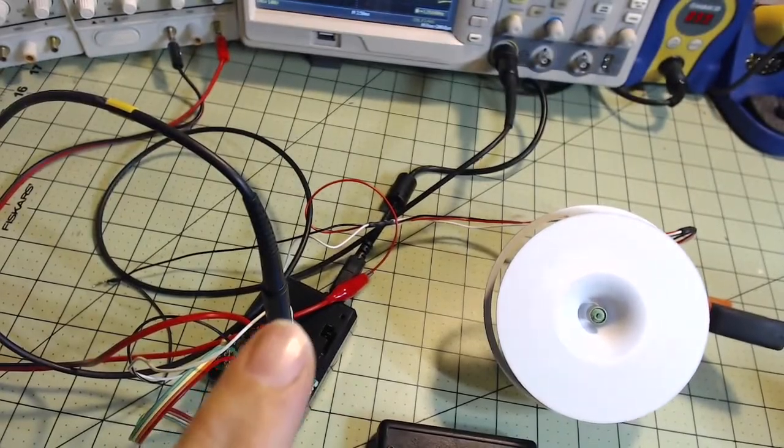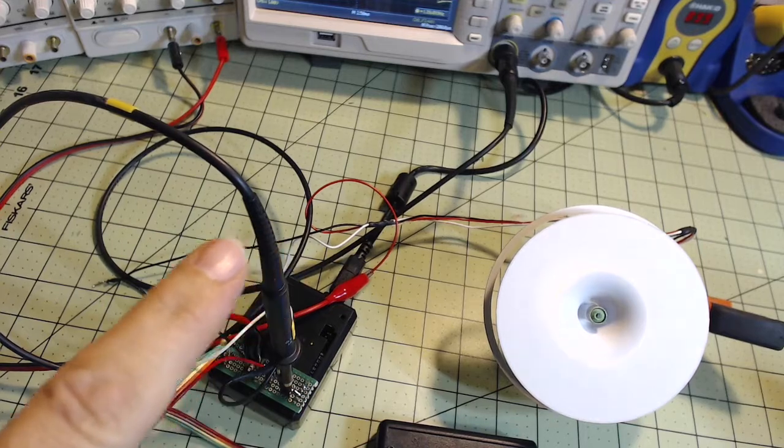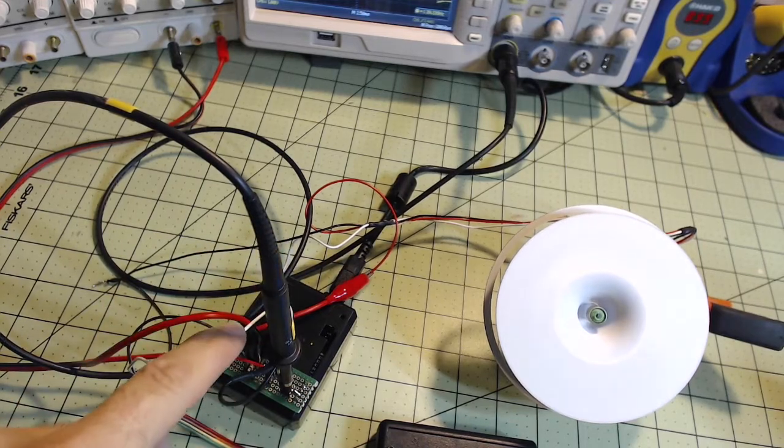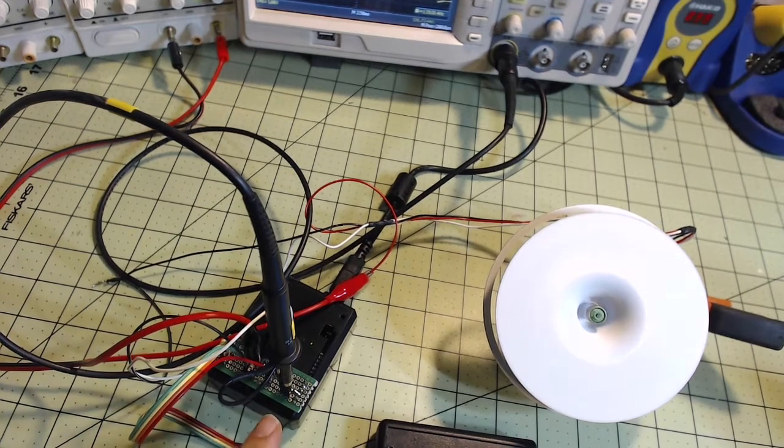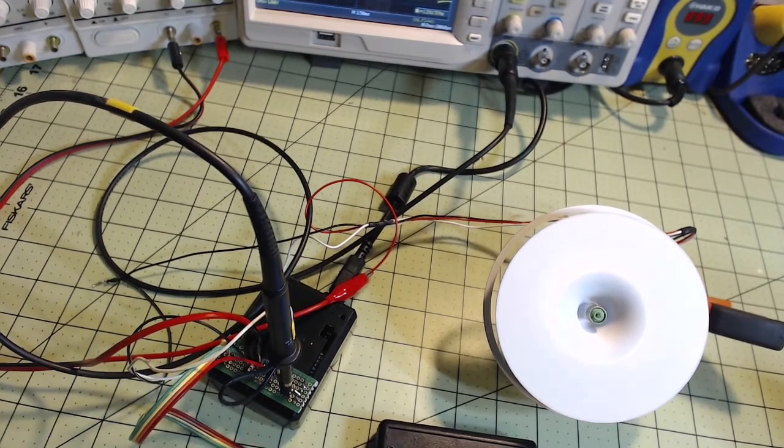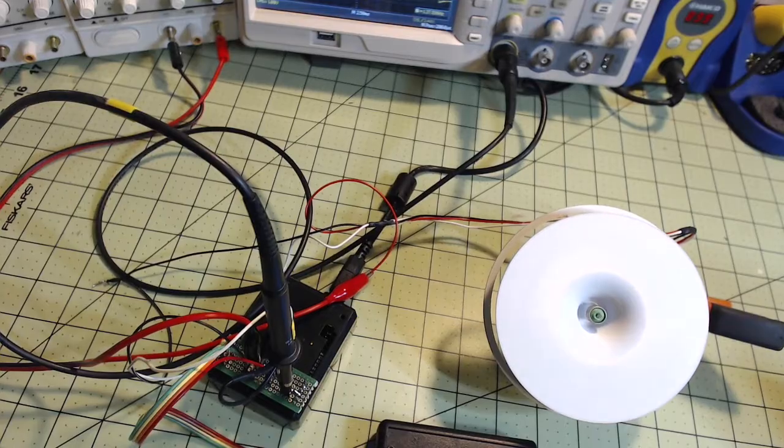Now from the fan, that's the black and the red wire. From the white wire right there, you get all the way to here. This is the input for the microprocessor that reads the RPMs of the feedback.